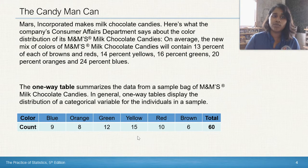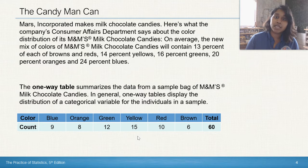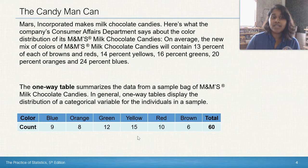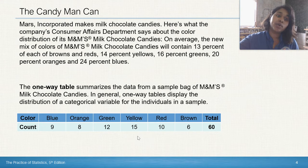Let's jump on in with an example. The Candyman can. Mars Incorporated makes milk chocolate candy. Here's what the company's consumer affair department says about the color distribution of its M&M milk chocolate candies. On average, the new mix of colors of M&M's milk chocolate candies will contain 13% of each of browns and reds, 14% yellows, 16% greens, 20% oranges, and 24% blues.